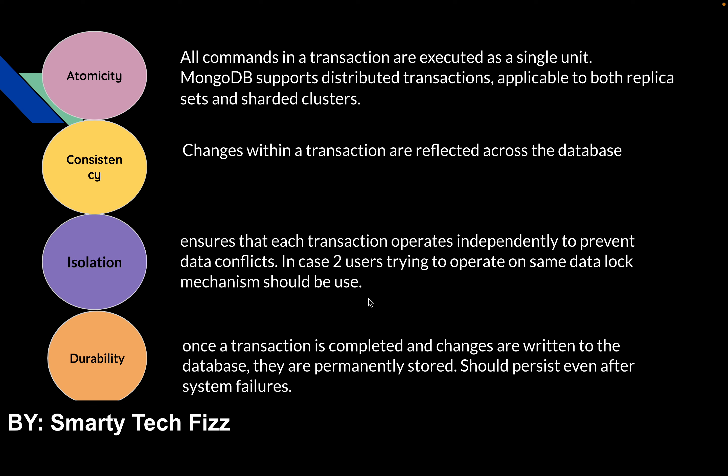Durability means that once a transaction is completed and changes are written to the database, they are permanently stored and should persist even after a system failure. If a transition was happening and a system failure occurred, when the system restarts the data should still be there. In MongoDB, the op log transaction maintains a record of what has been updated and inserted, so when your system restarts it looks into the op log and that record is maintained.